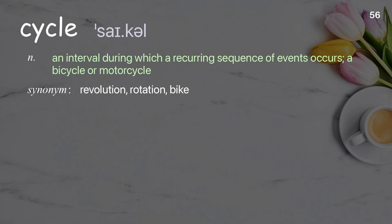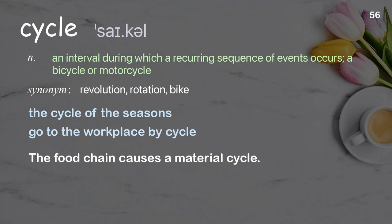Cycle: a series of events that happen repeatedly in the same order. Examples: the cycle of the seasons, go to the workplace by cycle. The food chain causes a material cycle.